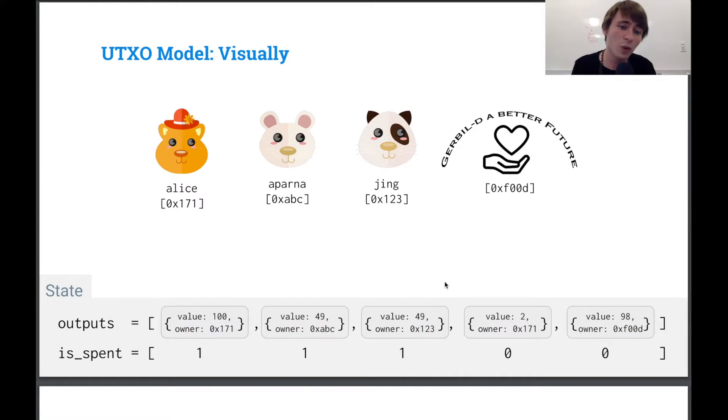So we're set. So if we want to look up the balances, we'll see that Alice still has that two. She doesn't have the original one that she had because that's spent, but she does have two. So we set $2. Aparna only has that one. So she already spent her UTXO. So that's zero. Similar with Jing. And the GerBuild a Better Future Foundation has $98. It's a better world for all of us.